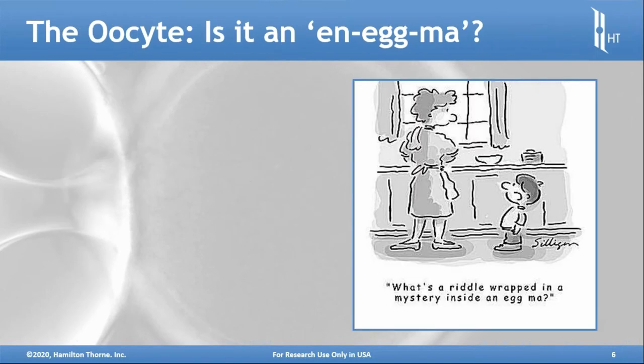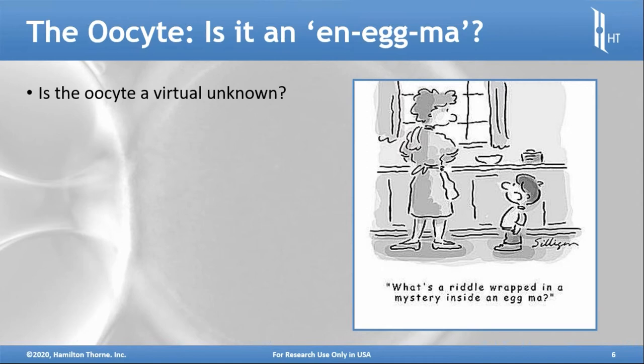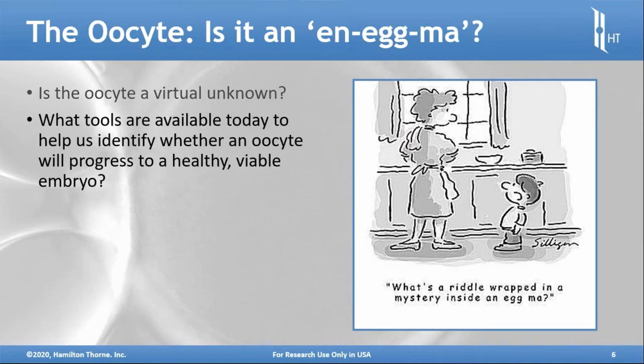There's a story — it's a riddle wrapped in an enigma. So what is that riddle wrapped up inside of an egg? Is the oocyte an unknown? And what tools can be used these days to begin to identify which oocytes are more healthy and more viable?